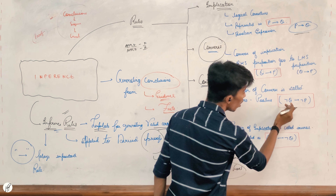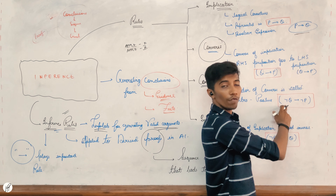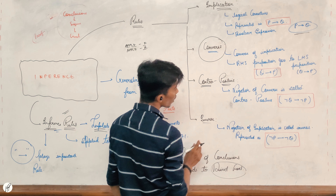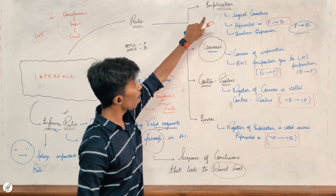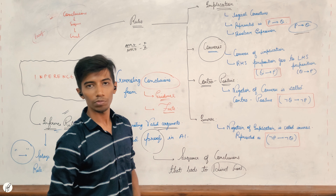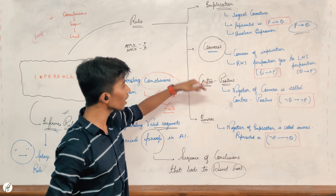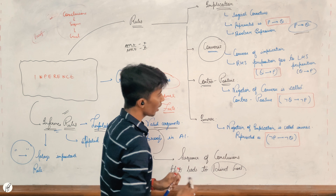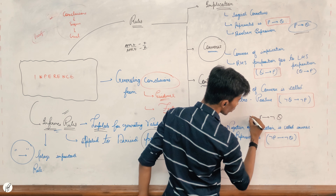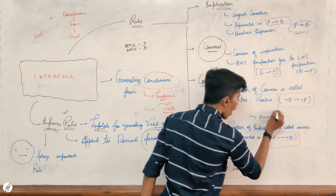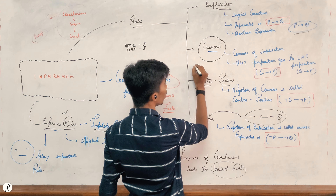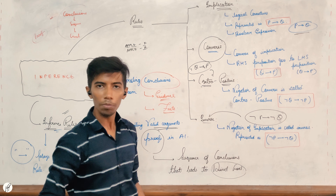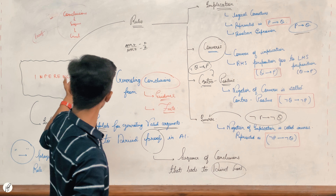When I have Converse with negation — here, Q implies P becomes negation of Q implies negation of P. I will show you Contra Positive. I will say one inverse — inverting this implication. Contra Positive is Converse with negation. Inverting this implication, if we negate P it becomes our Contra Positive. In simple terms, these four rules are our inference rules.